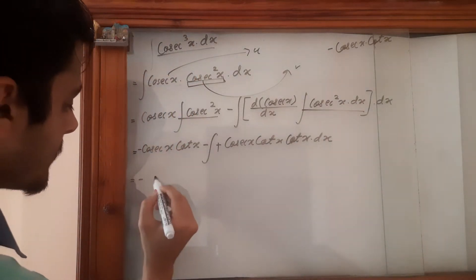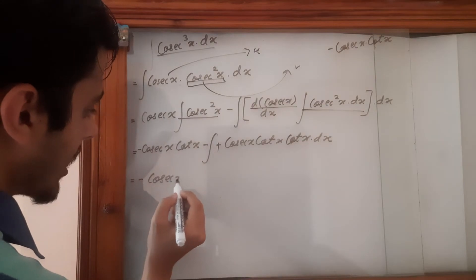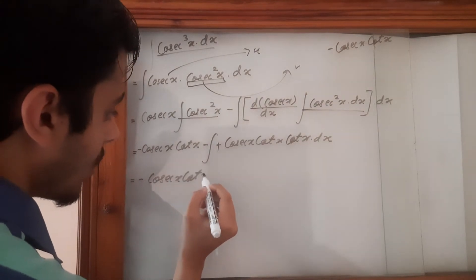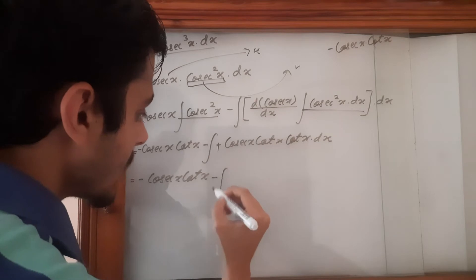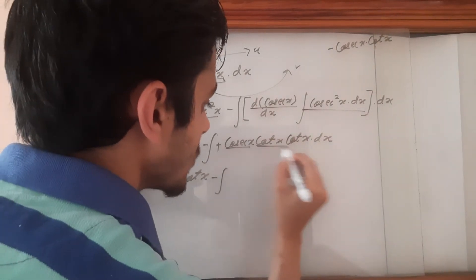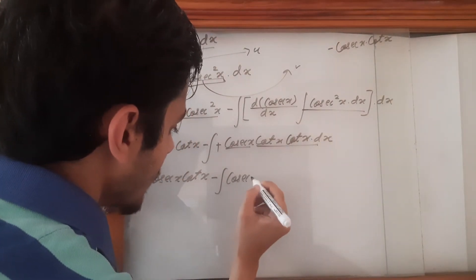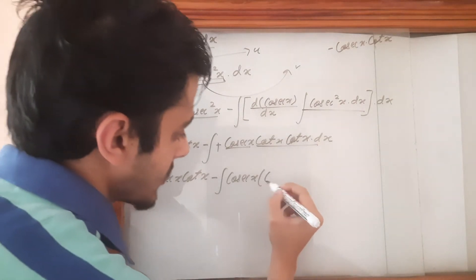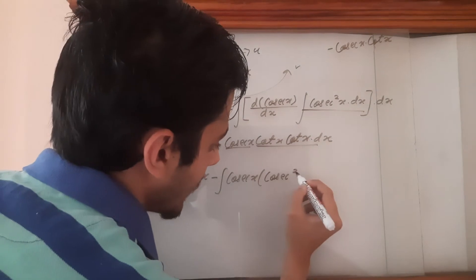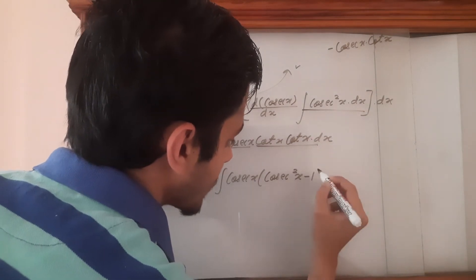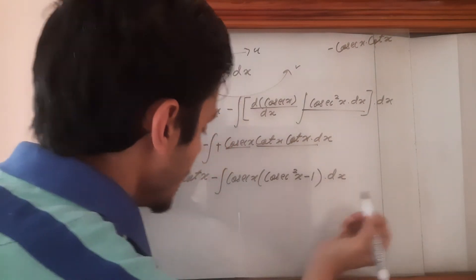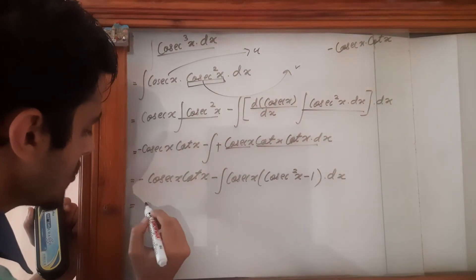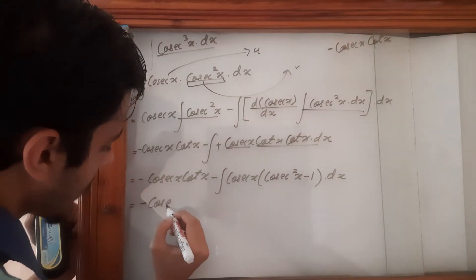So cot x dx. So is equal to minus cosec x times cot x minus. So cosec x times cot square x. And let's express cot square x in terms of cosec square x. So it is cosec square x minus 1 dx. So it is cosec square x.